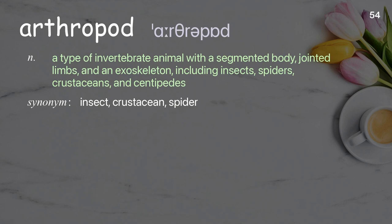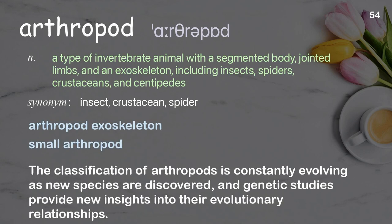Arthropod. A type of invertebrate animal with a segmented body, jointed limbs, and an exoskeleton, including insects, spiders, crustaceans, and centipedes. Examples: small arthropod. The classification of arthropods is constantly evolving as new species are discovered and genetic studies provide new insights into their evolutionary relationships.